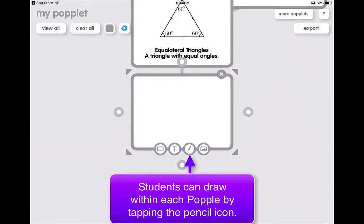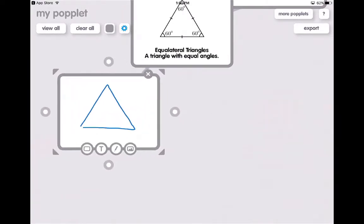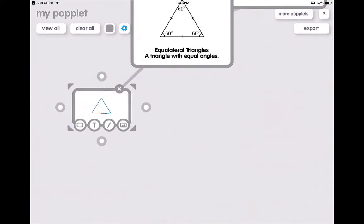Now if I want to add a popple, or if I want my students to draw within there where they would draw an equilateral triangle, they can. So that's a good option there as well. If I click outside of it, I then can move that popple around and make it smaller.